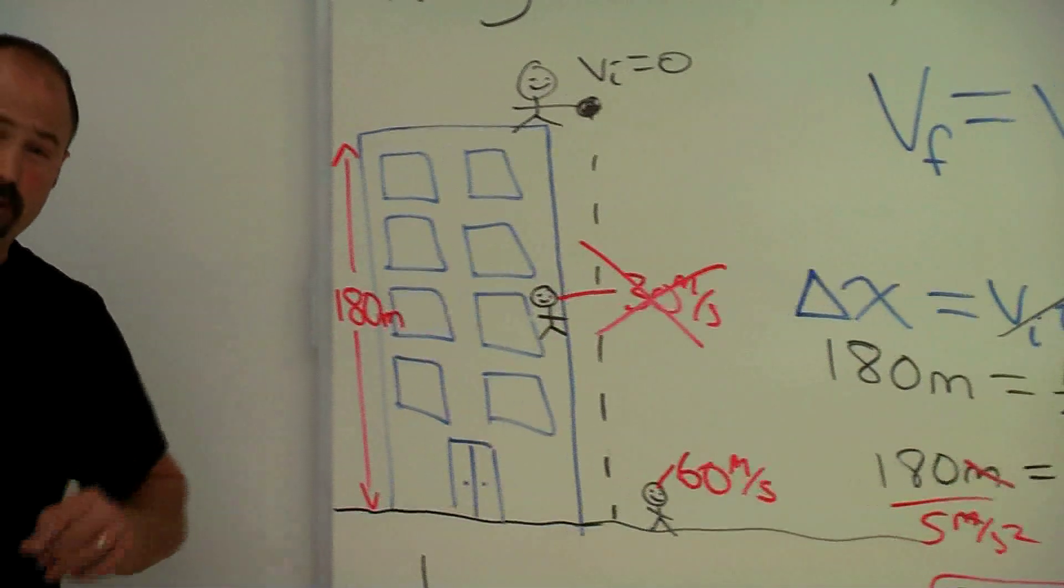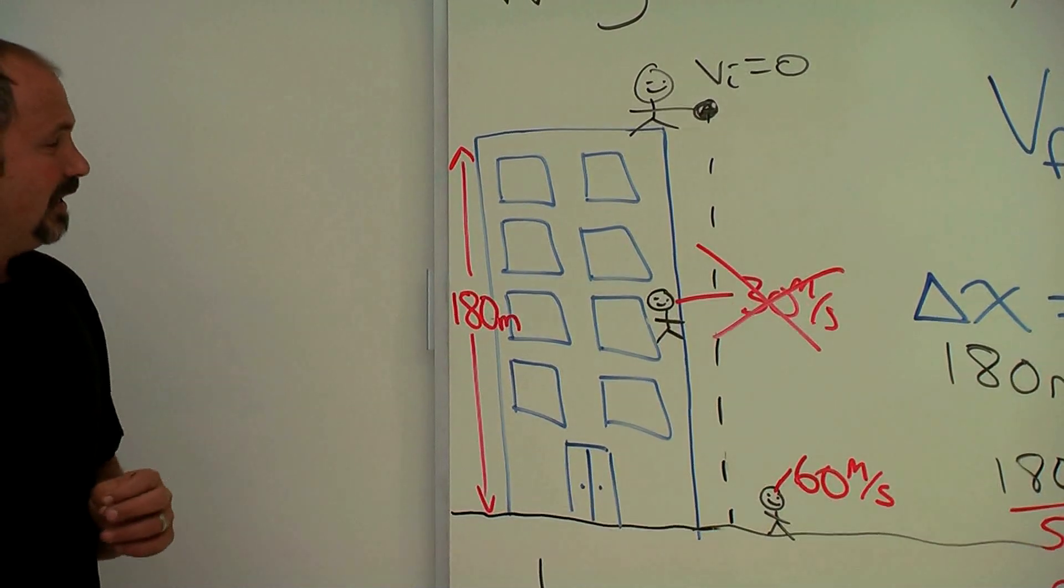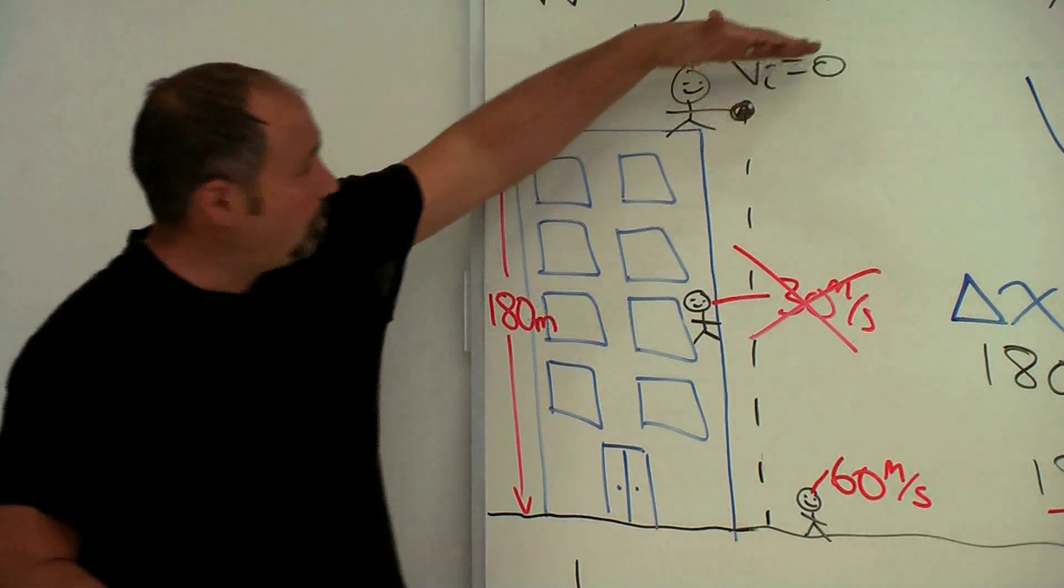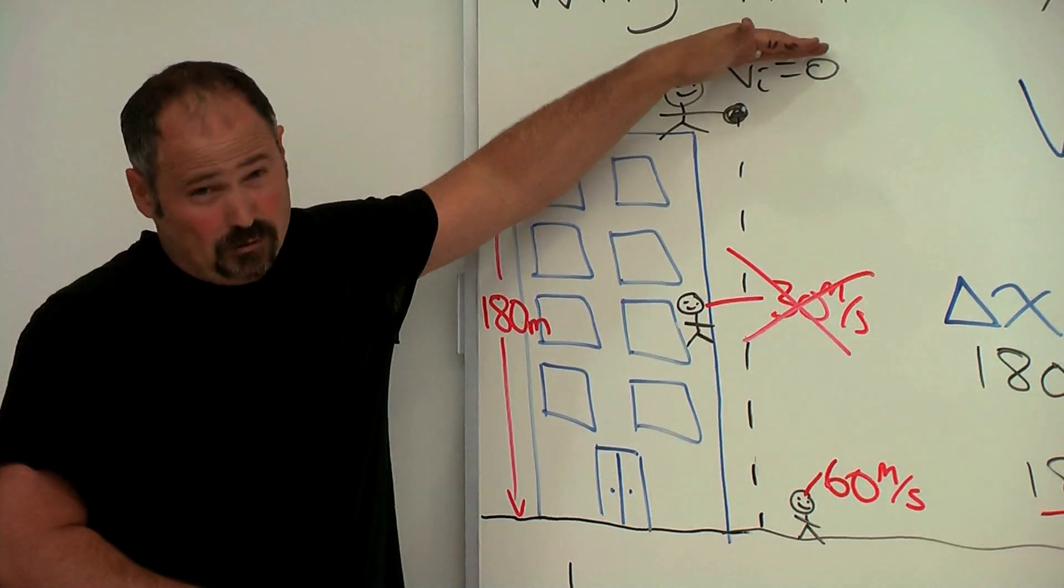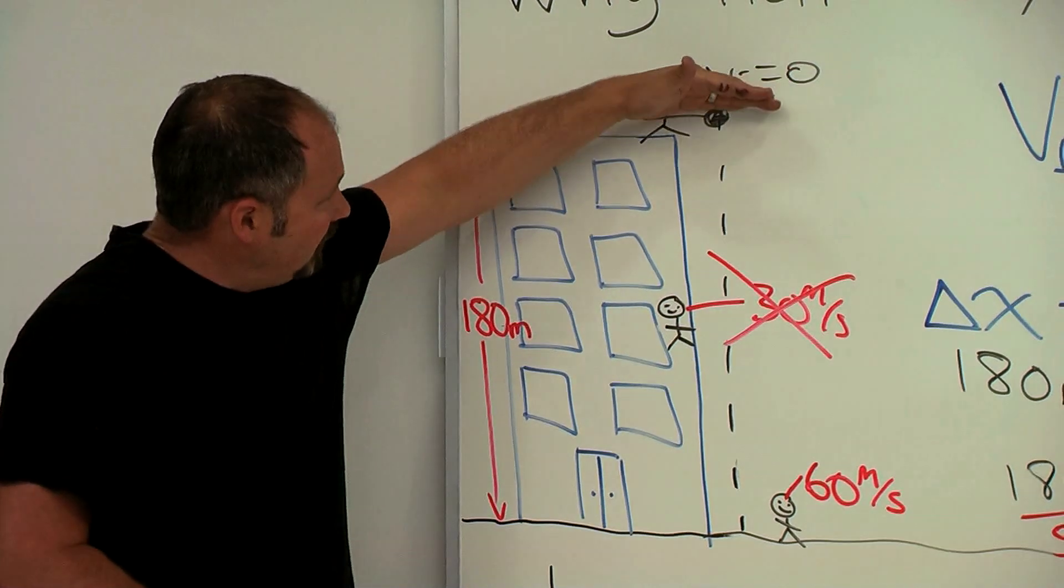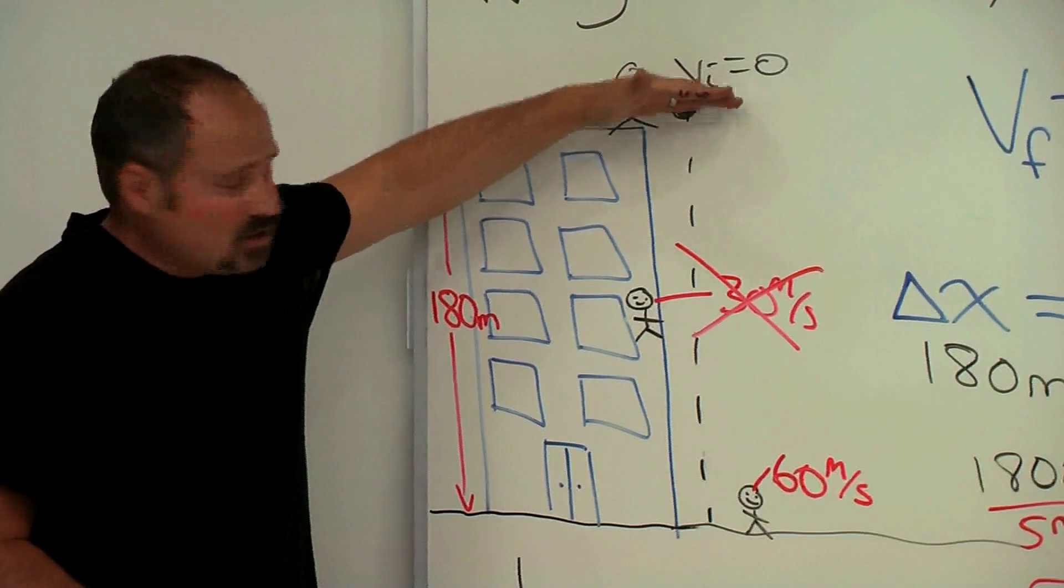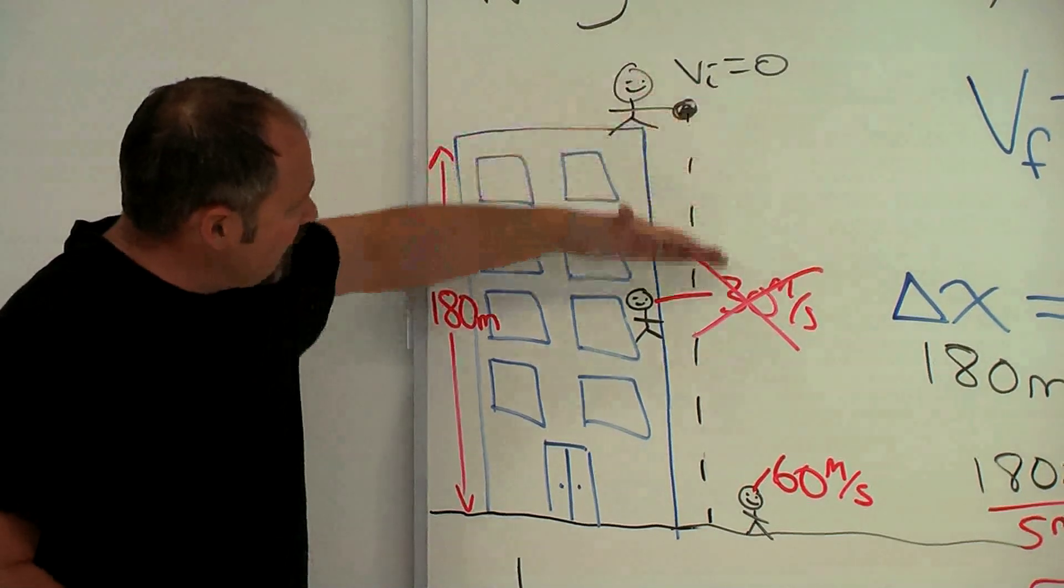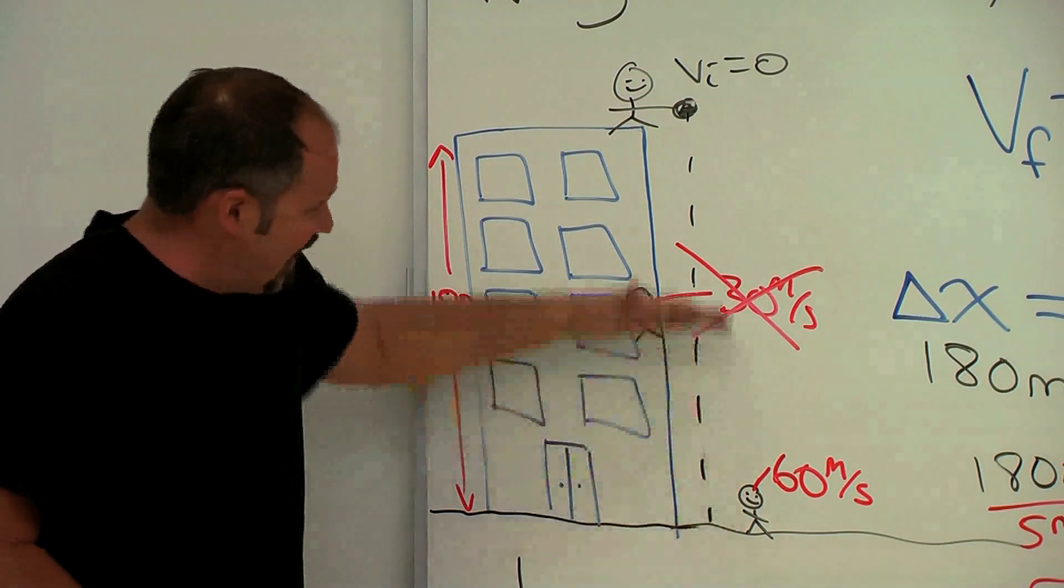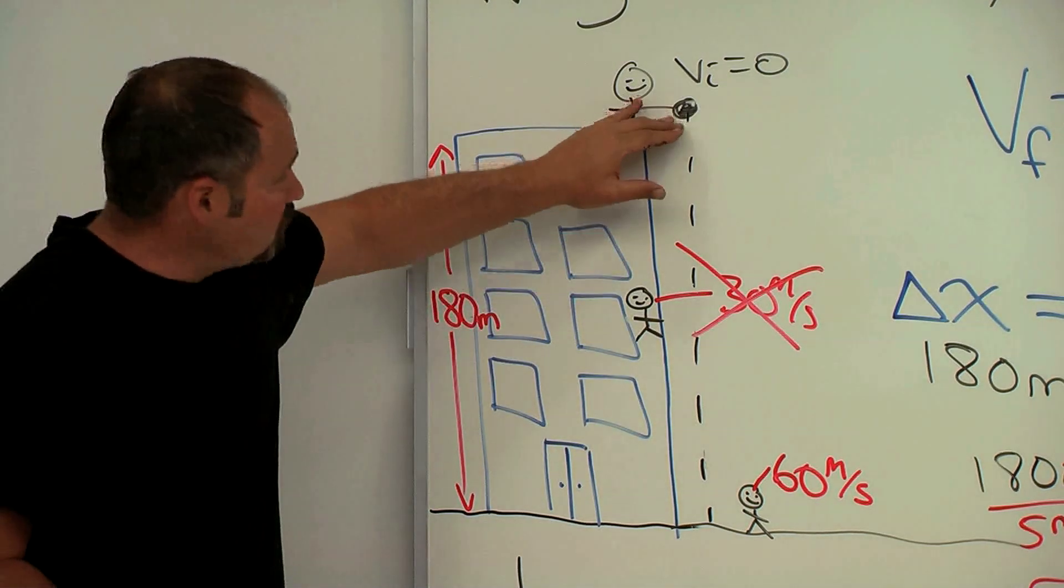He sees a speed much larger than 30 meters per second. It's kind of interesting. The reason is the ball starts off with zero velocity. Therefore, it spends more time in the first half because it's going slower in the first half than in the second half.